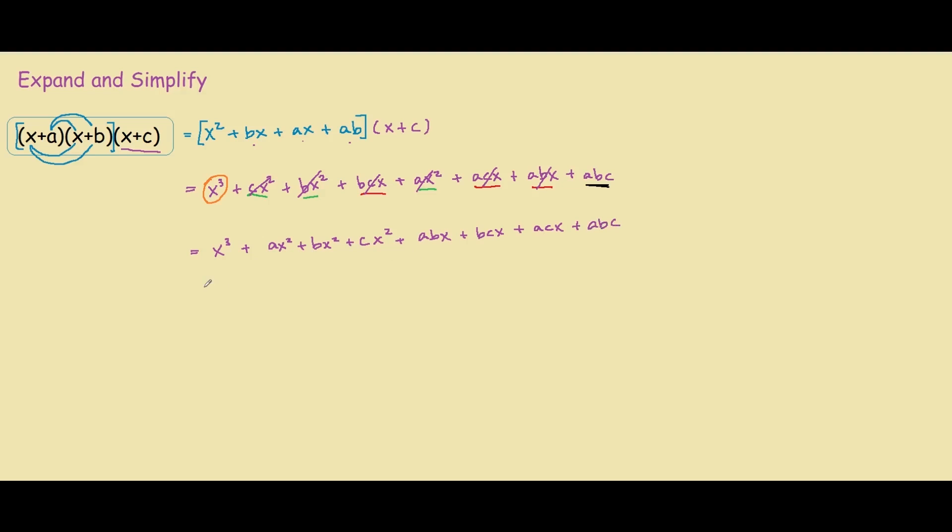So from here, we can find out that we actually can factor out pretty easily. If we factor out the x squared from these three terms over here, this one, this one, and this one, we have x squared outside of a plus b plus c.